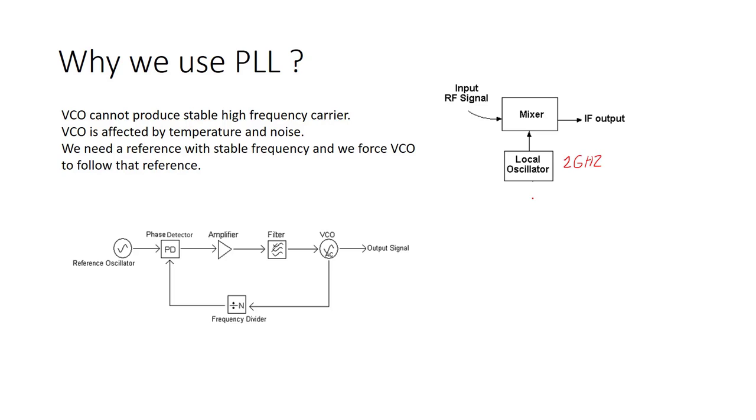The problem is that VCO cannot produce a stable high frequency carrier. Because VCO is affected by temperature and noise. So we are expecting to have a fixed 2 GHz frequency but because VCO is affected by lots of issues, maybe we can get a frequency like 1.9 GHz or 2.1 GHz. So we need a system to stabilize the frequency of VCO.